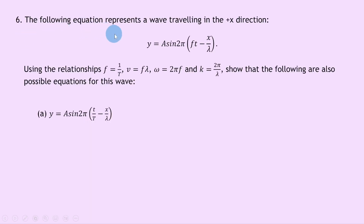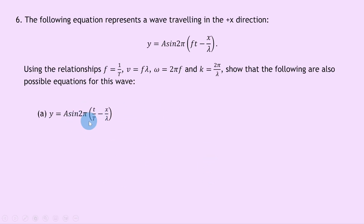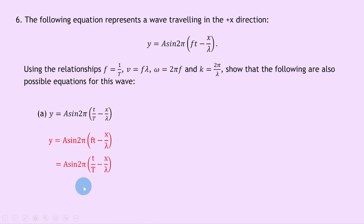Question 6 says the following equation represents a wave travelling in the positive x direction: y equals A sine 2 pi times ft minus x over lambda. Using the relationships f equals 1 over T, v equals f lambda, omega equals 2 pi f, and k equals 2 pi over lambda, show that other equations are also possible. For part a, we want to show y equals A sine 2 pi times t over T minus x over lambda. Using f equals 1 over T and replacing f gives y equals A sine 2 pi times t over T minus x over lambda.